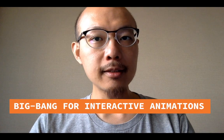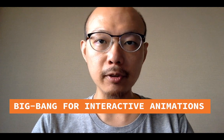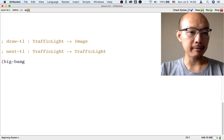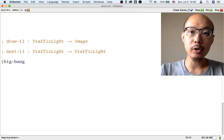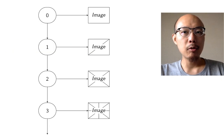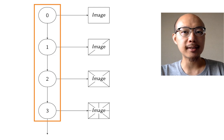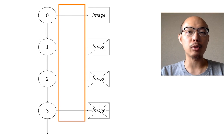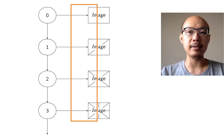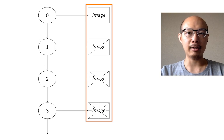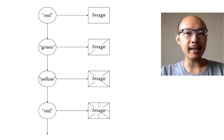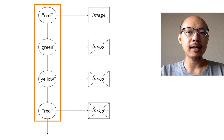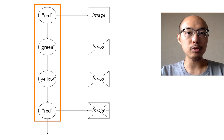We're going to use not the animate operation that you've seen before, but a more powerful and more general operation called BigBan. BigBan is like animate, but more general. In animate, what happens is we have a sequence of successive numbers starting with zero, and we give each of these numbers to the drawing function to turn it into an image, and we see the sequence of successive images. BigBan is like that, except we don't have to use numbers — we could use other things, and in this animation it is convenient to use a traffic light.